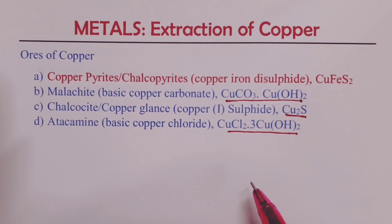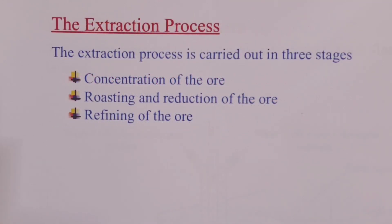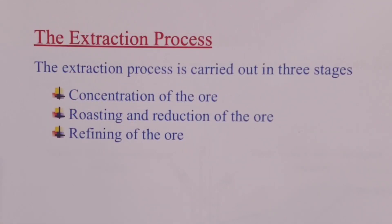We now proceed to the extraction process. The extraction process of copper metal is divided into three main stages or steps. Step one involves concentration of the ore where we remove much of the unwanted materials present in the ore. Step two involves roasting followed by reduction of the ore.